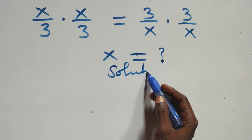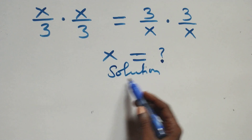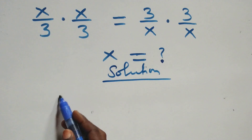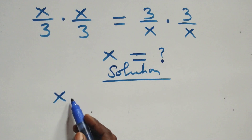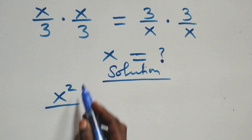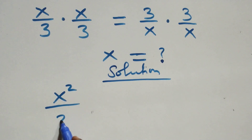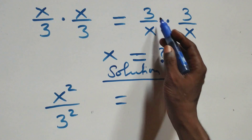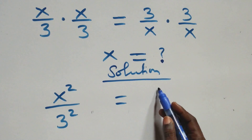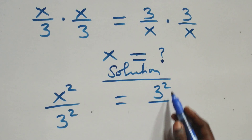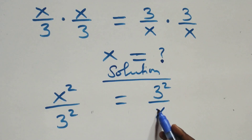Now what we have here, we can multiply directly: x times x gives x squared. Then also three times three, we write it as three squared. On the right-hand side as well, three times three is three squared, and then x times x is x squared.